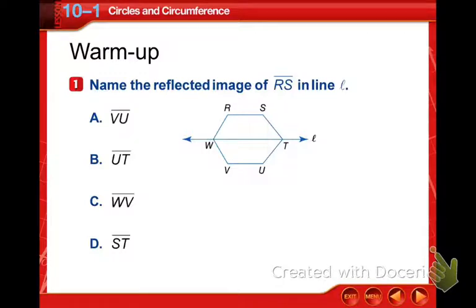Here our warm-up says to name the reflected image in line of RS in line L. So reflection means it has to be flipped across the line and that means from RS across L is the line VU. There's our new line VU, which means that our answer is A.